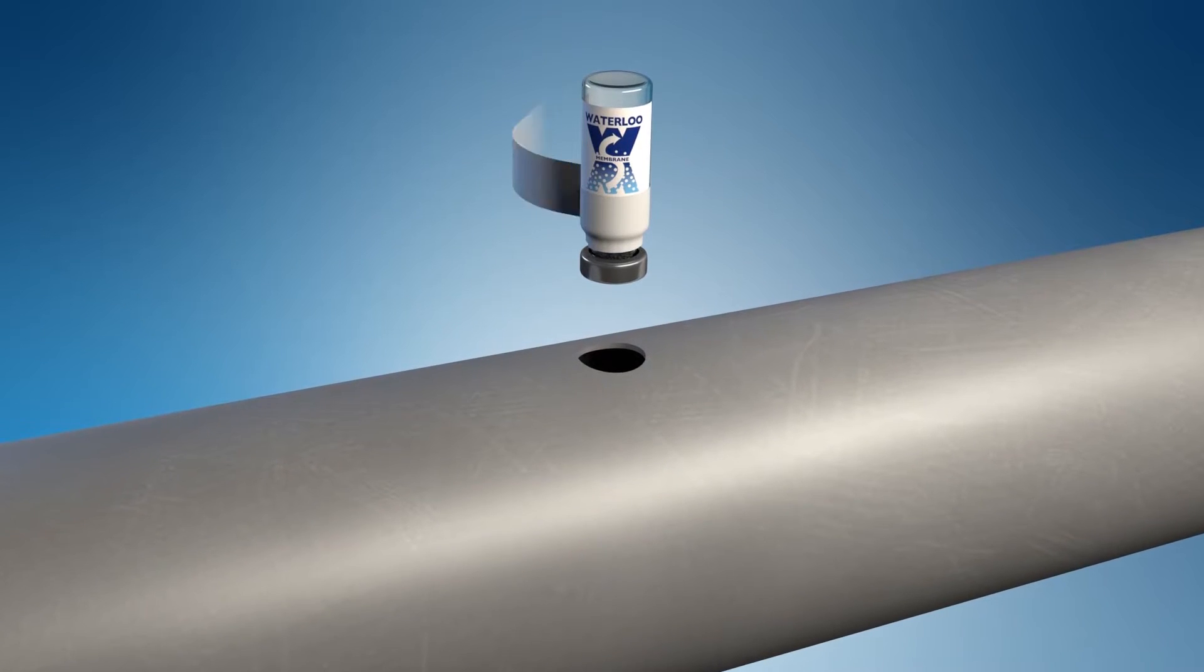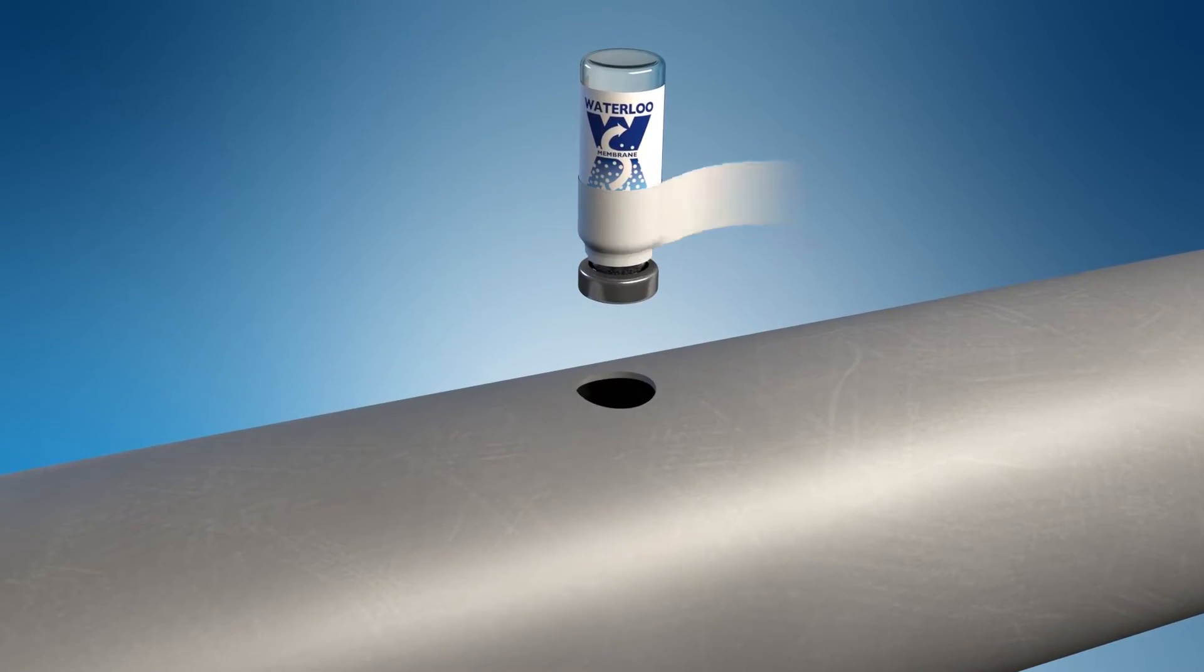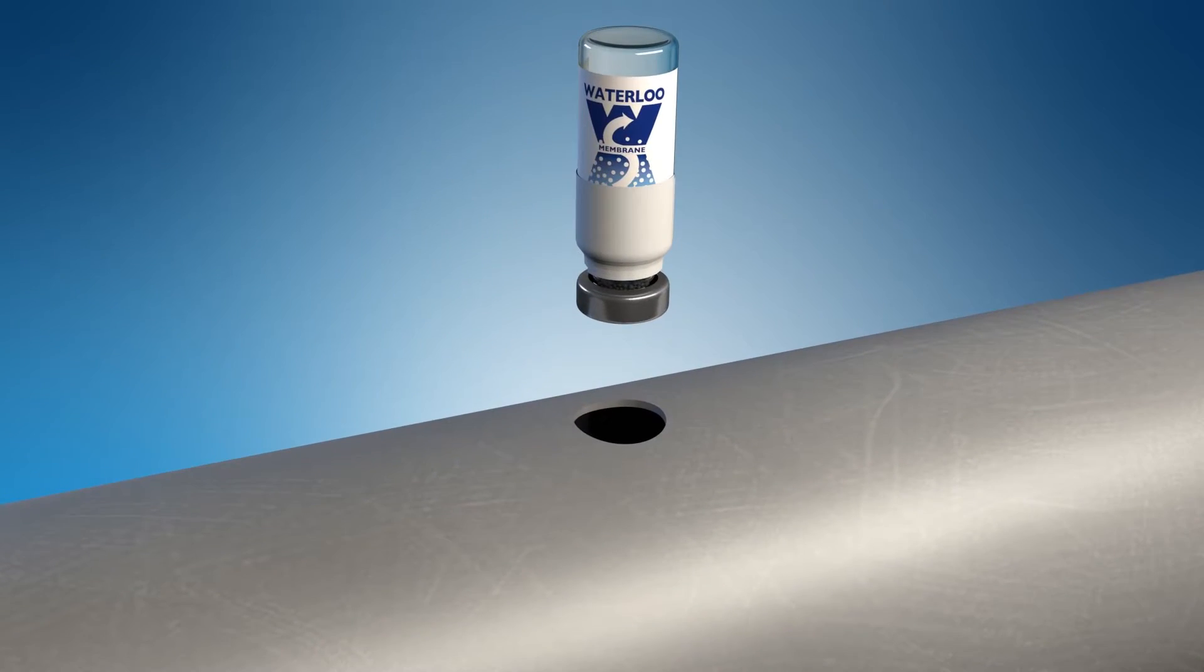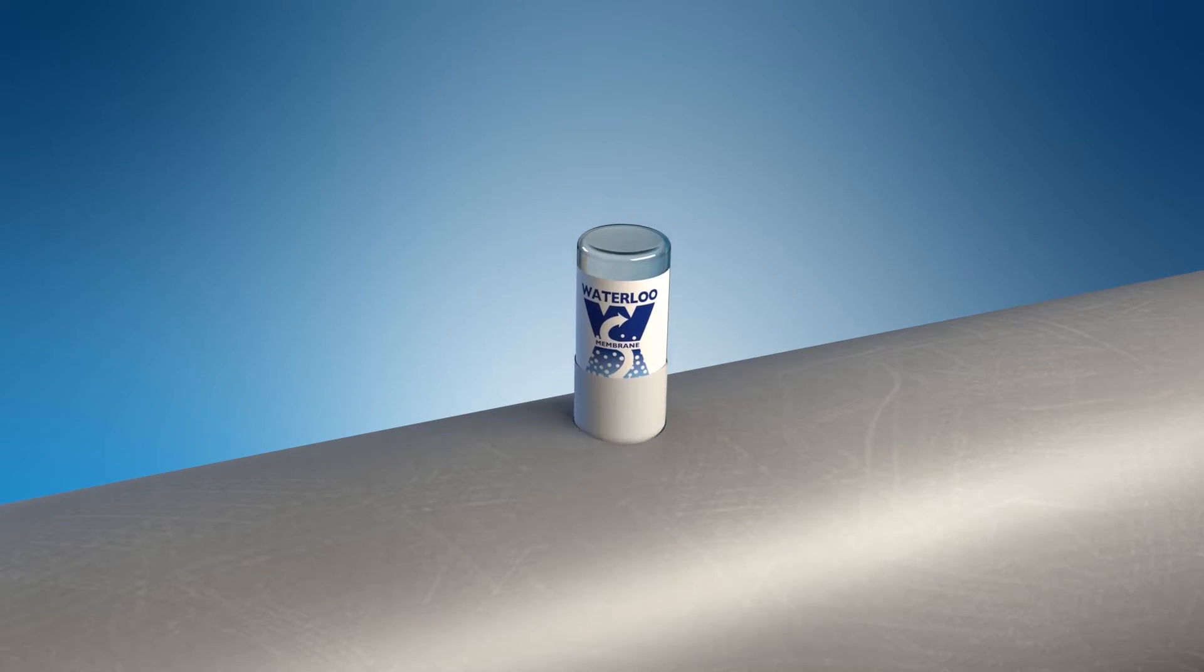Alternatively, the Waterloo membrane sampler can be inserted directly into tapped PVC pipes using Teflon tape around the sampler body to create a tight seal into the pipe.